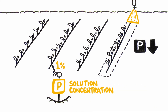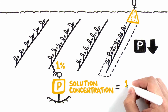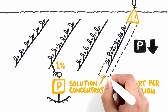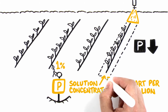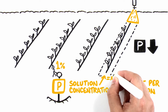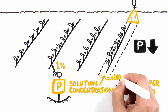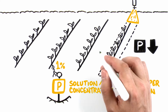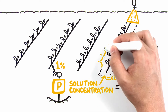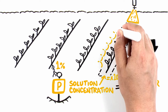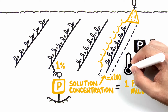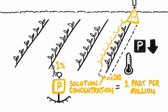Soil solution concentrations are generally less than one part per million, but near the band, solution concentrations can be more than 100 times greater. Band applications of phosphorus can give young seedlings a great head start in low testing soils, especially when planting early into cooler soils.